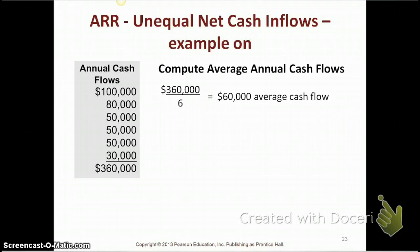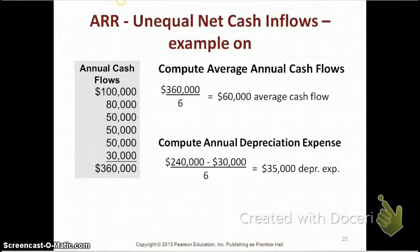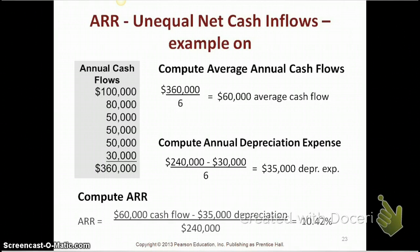Next, we calculate our annual depreciation expense. Depreciation is calculated as cost minus residual value divided by the number of years of useful life — that's the straight-line method. So your cost is $240,000, your residual value is $30,000, and the useful life is six years, giving you a depreciation expense of $35,000 per year. Now subtract depreciation expense from average cash flows to get average annual operating income. Divide that by your initial investment of $240,000, giving you an accounting rate of return of 10.42%.